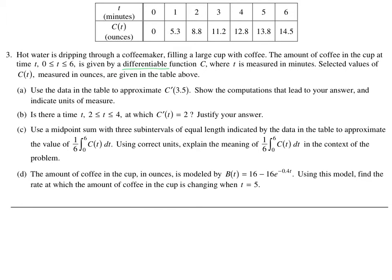And selected values of C of T measured in ounces are given in the table above. So this right here is our equation, but in the format of a table. Basically what I'm saying by that is you could make an equation for this. But in this situation, we have a table of values that depicts the amount of ounces in a cup, C for cup probably, over a certain amount of minutes. And we're talking about a six-minute period.